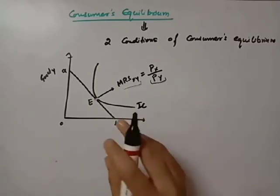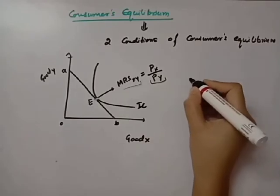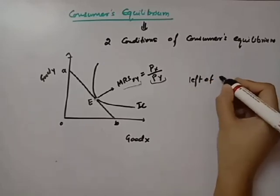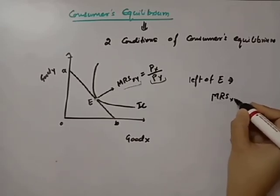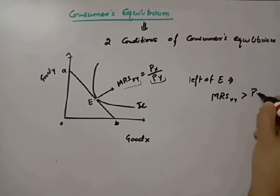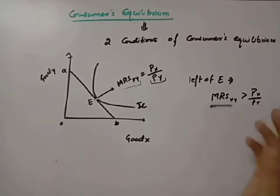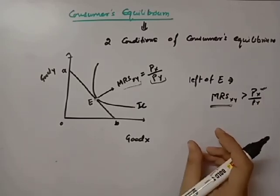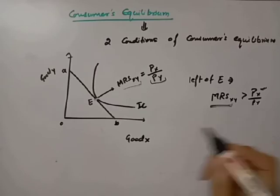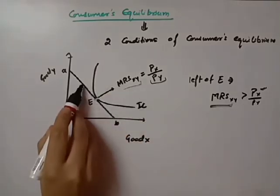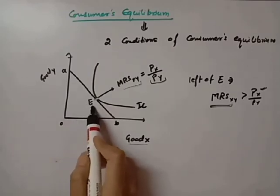If we consider any point to the left of E, at that point the MRS — the Marginal Rate of Substitution between commodity X and Y — is greater than the price of good X divided by the price of good Y. This means the consumer's willingness to substitute is higher than the budget line slope, so the consumer tends to increase the consumption of good X and decrease the consumption of good Y. Therefore, any point to the left of E will lead the consumer to increase consumption of good X, and the consumer will eventually reach point E.